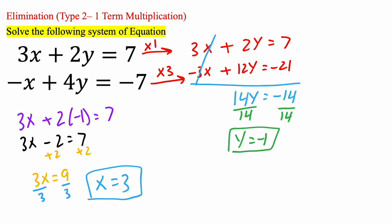Now it's always a good idea to check. So 3 times 3 gives you 9, 2 times negative 1 is negative 2, 9 minus 2 is 7. We'll try the second one. Negative 3 plus 4 times negative 1, so negative 4. So negative 3 minus 4 is negative 7. And so that's correct.